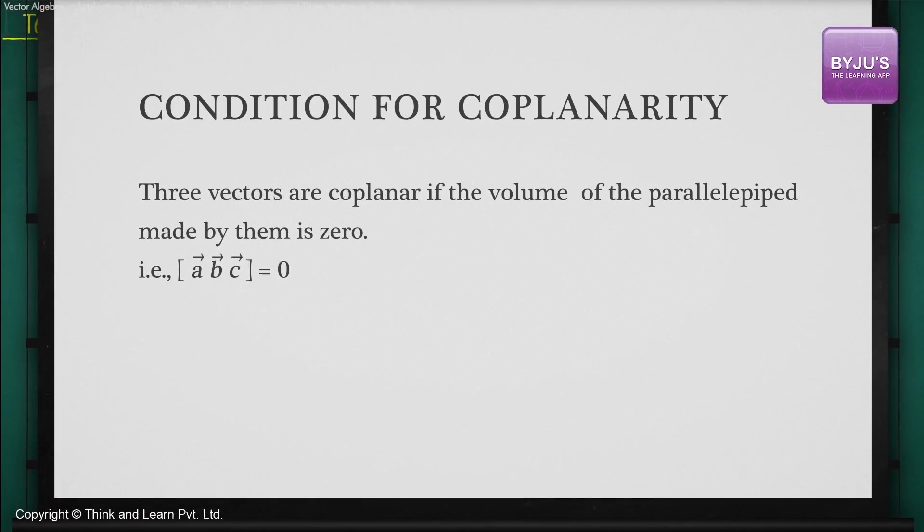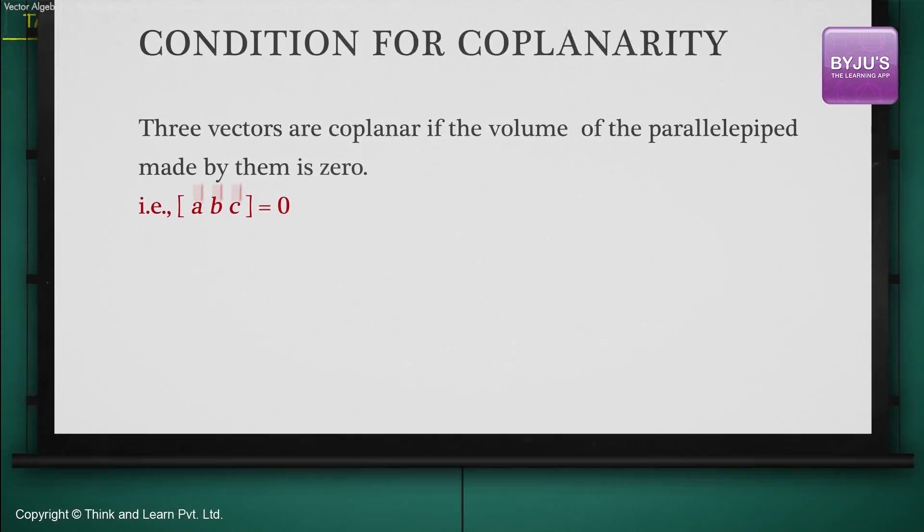This in a way gives the condition of coplanarity. That is, three vectors are coplanar if the volume of the parallelepiped formed by them is zero or if their box product is zero. Therefore, box product of ABC is equal to zero when vectors A, B and C are coplanar.